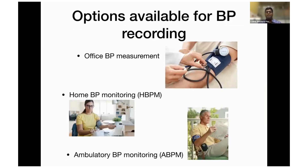Also advise: palpate the radial pulse or at least the brachial pulse to get an idea of systolic blood pressure, otherwise you might miss very high blood pressure when you don't inflate adequately. When measuring blood pressure, we have a few options: manual or office blood pressure measurement; home blood pressure monitoring; and the most sophisticated — ambulatory blood pressure monitoring. ESC guidelines and all other guidelines emphasize the importance of home and ambulatory blood pressure monitoring. In elderly patients it is quite important because they cannot come to your practice every day, and significant side effects may cause them to discontinue treatment.